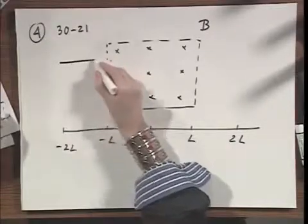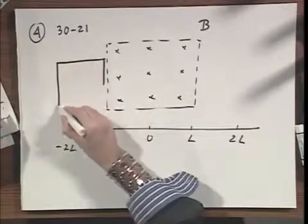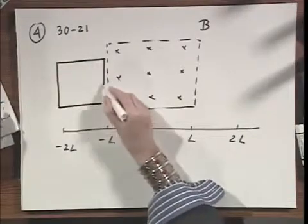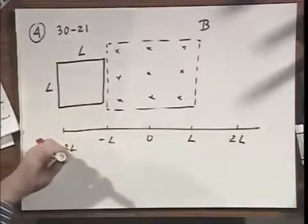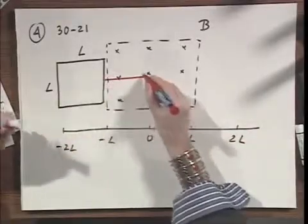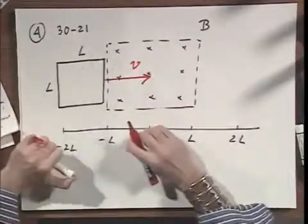Here I have a loop which has sides capital L, and that loop is being moved by me with a certain velocity V, dragged into this magnetic field.